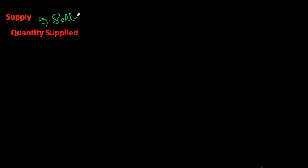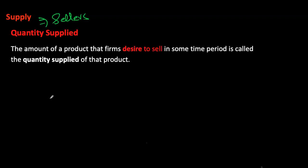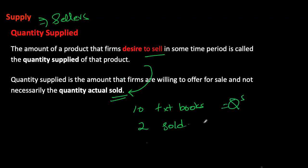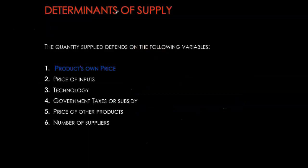The other side of the market is your supply side, which represents your sellers of the good. Quantity supplied, like quantity demanded, is the specific amount that sellers are willing to sell. Quantity supplied is not necessarily equal to quantity exchanged. For example, I might be willing to sell 10 textbooks but only end up selling two, so my quantity supplied is 10 and quantity exchanged is only two textbooks.